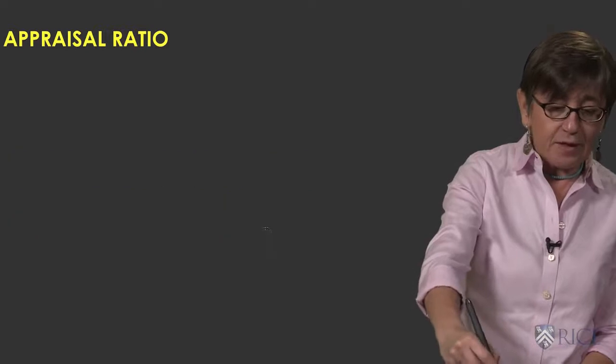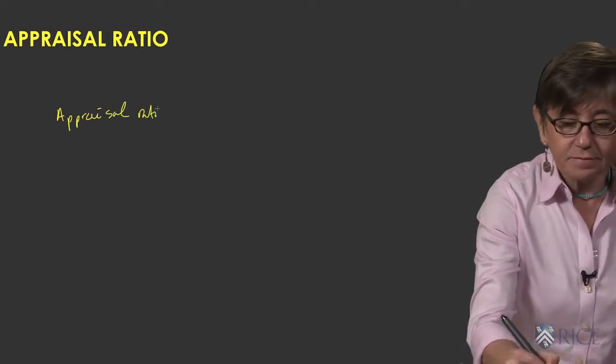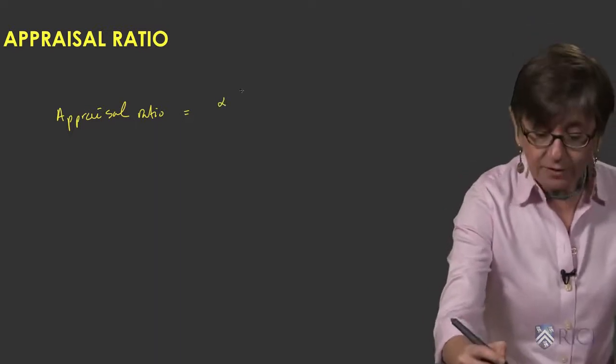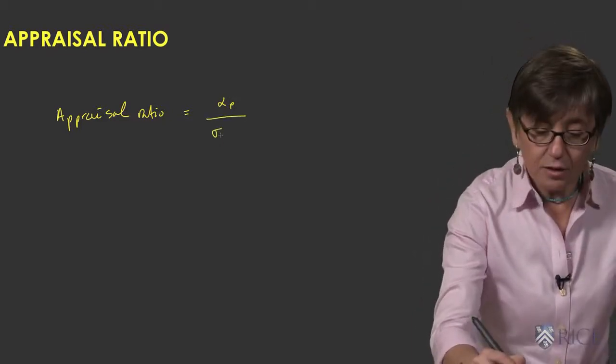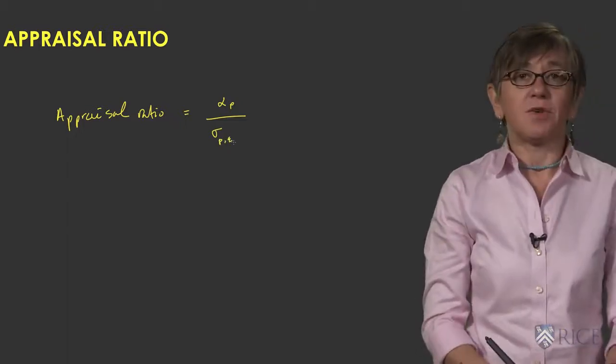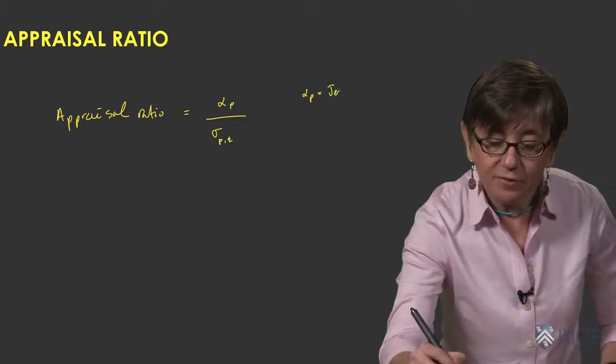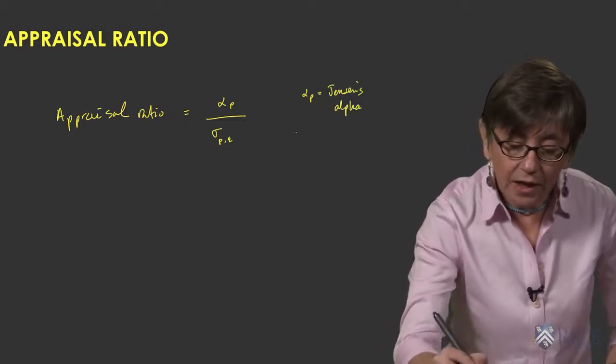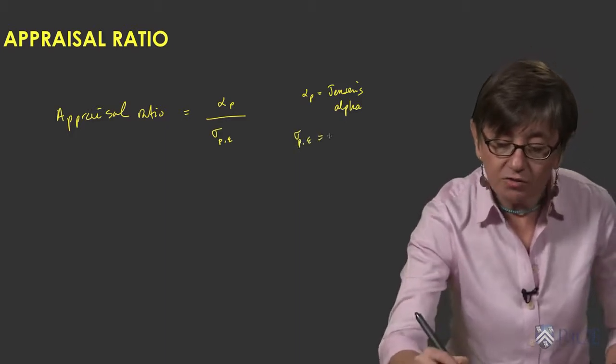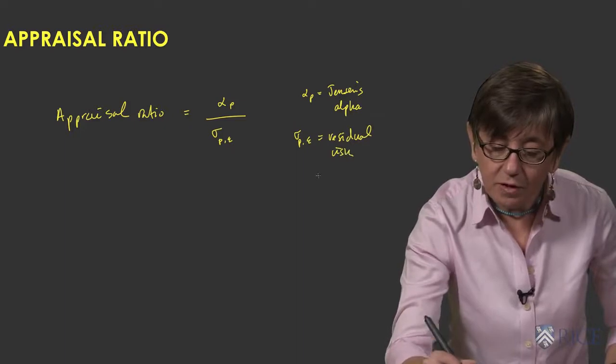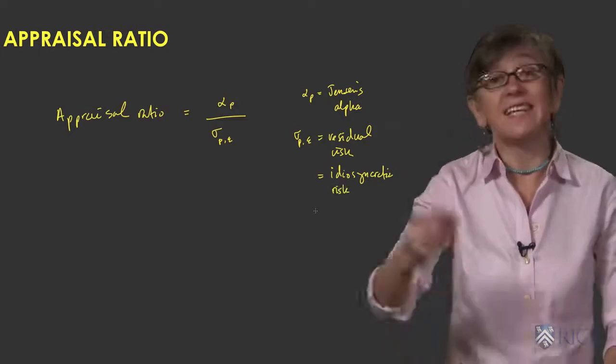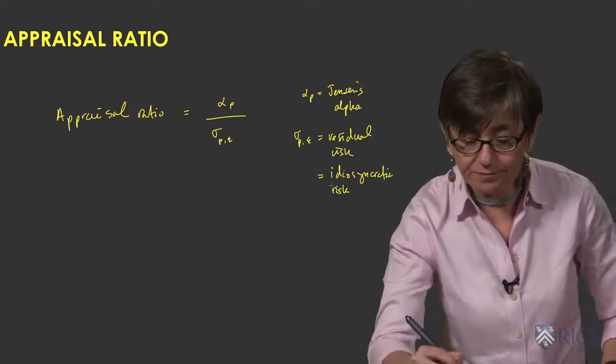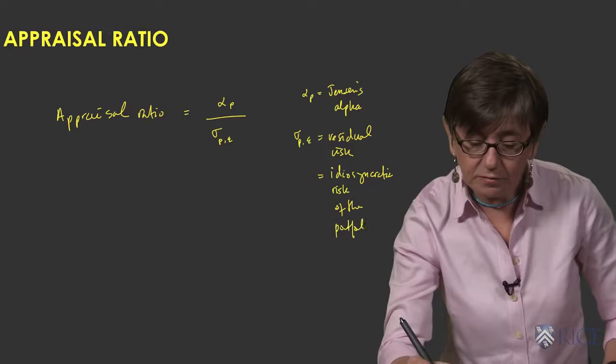So specifically the appraisal ratio is defined as the portfolio Alpha divided by the portfolio residual risk. This is the Jensen's Alpha for the portfolio. And this is the residual risk or the idiosyncratic risk of the portfolio - basically the volatility of the residuals.